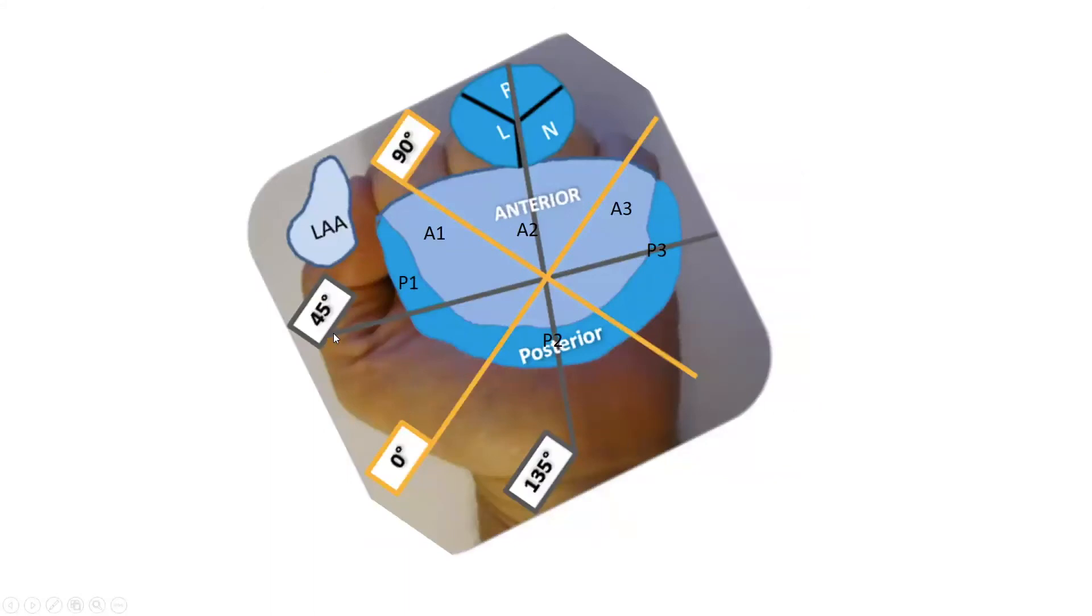So this is our intercommissural view here in gray. And please note that the degrees vary between people, body habitus, and orientation of the heart. Here it's 45 degrees. Other times, you may get it from 40 to 80. So in this view, we have the left atrial appendage, and the first thing we have, the most lateral aspect, is P1.